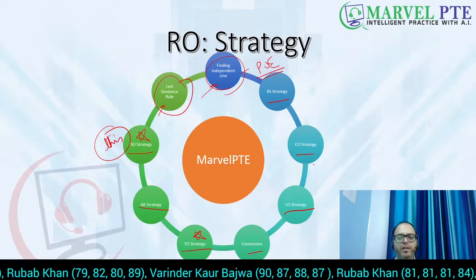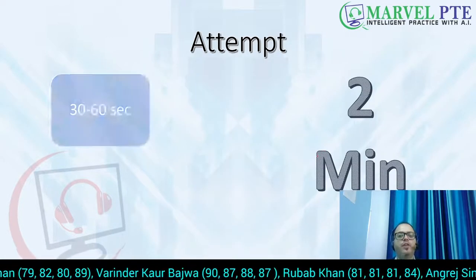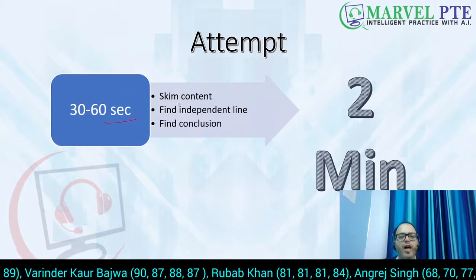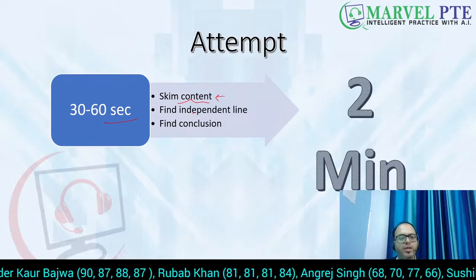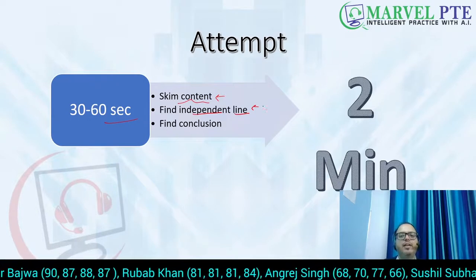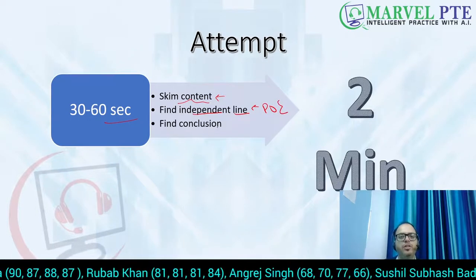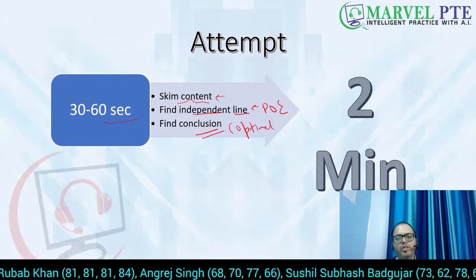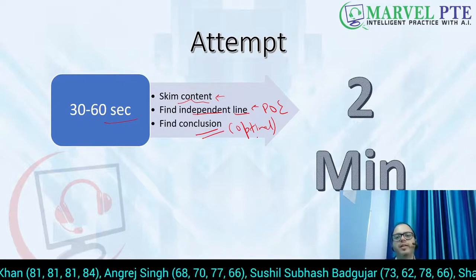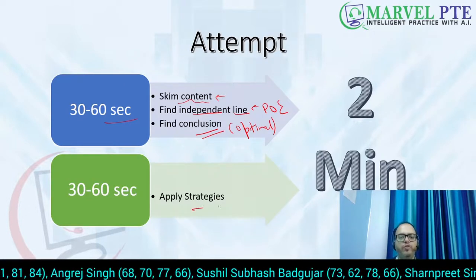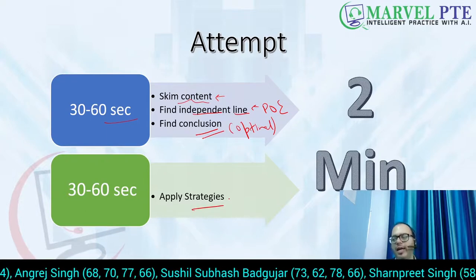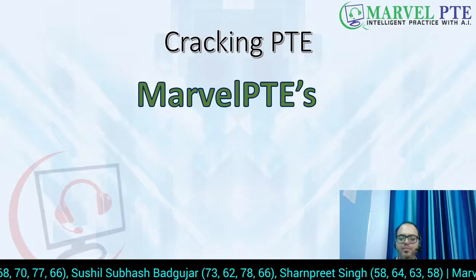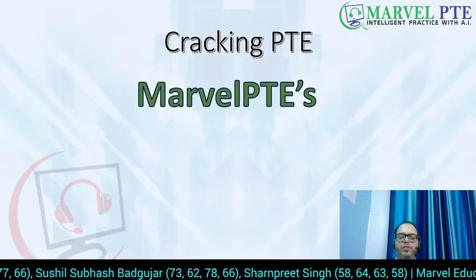These are our reading strategies or reading hacks for reorder paragraph. If you are able to understand and implement them, you can easily solve your reorder paragraphs within two minutes. In the first 30 to 60 seconds you have to skim the content, then find an independent line using process of elimination. You can find the conclusion line also, but remember — this is optional. In the next one minute, apply all the strategies and hacks.